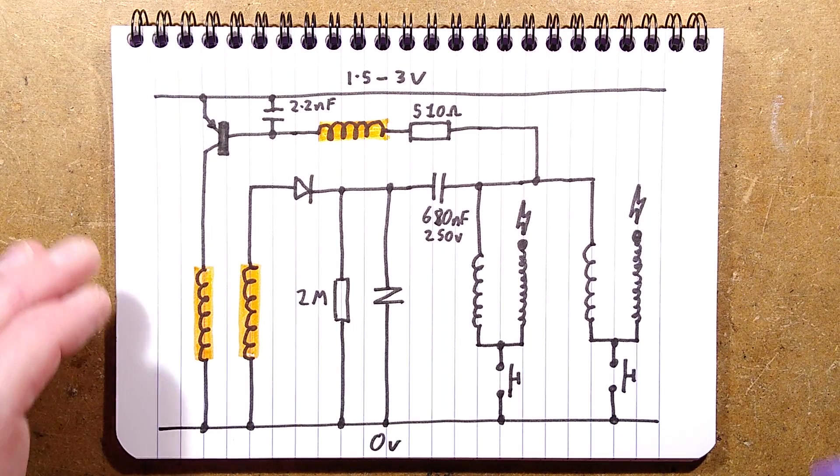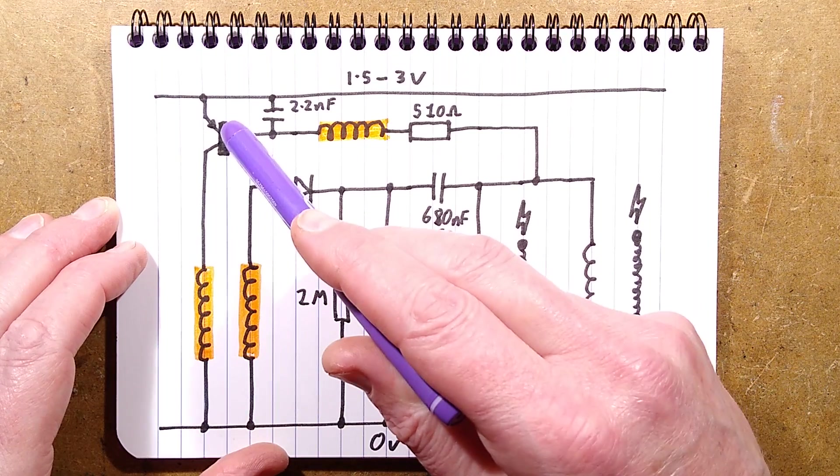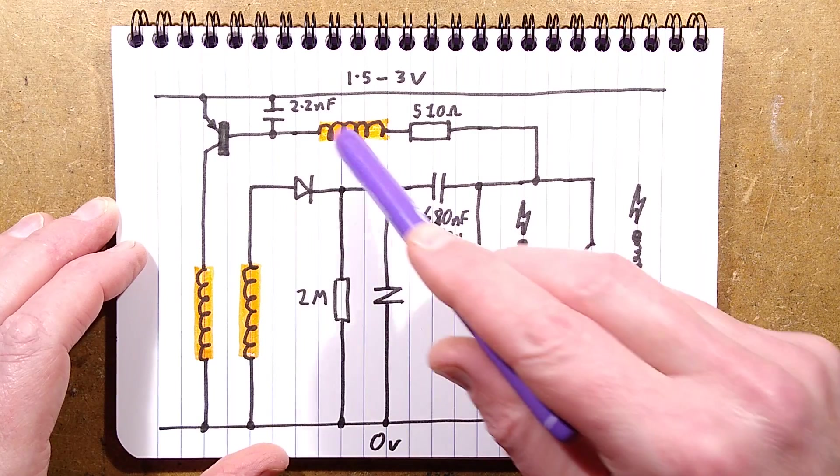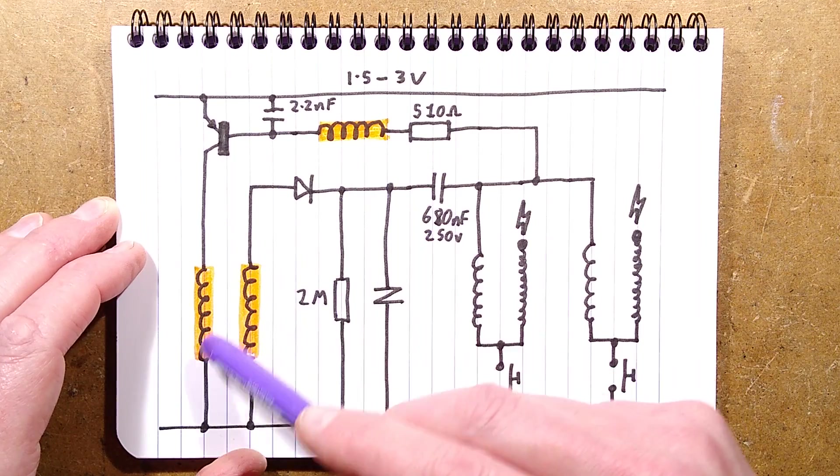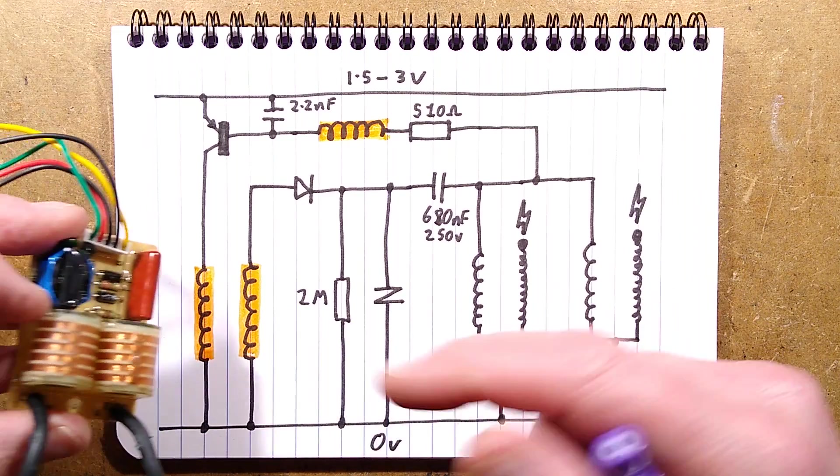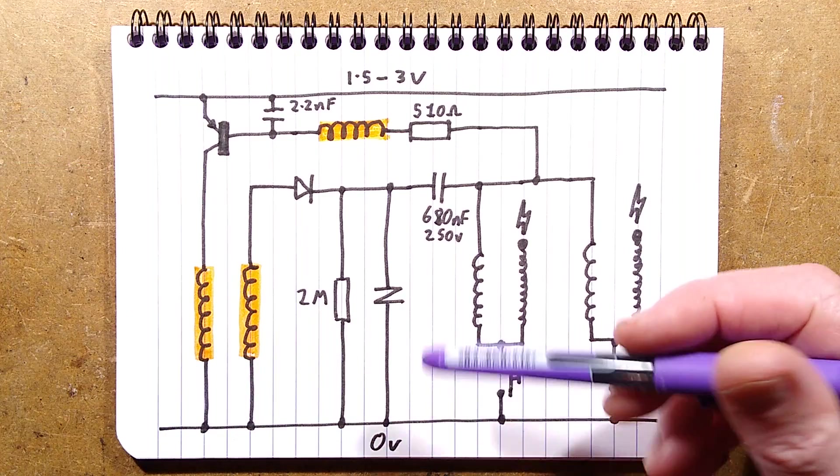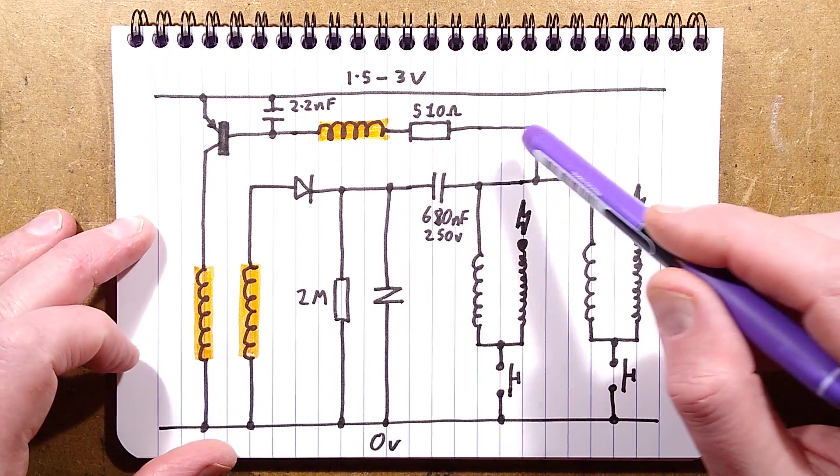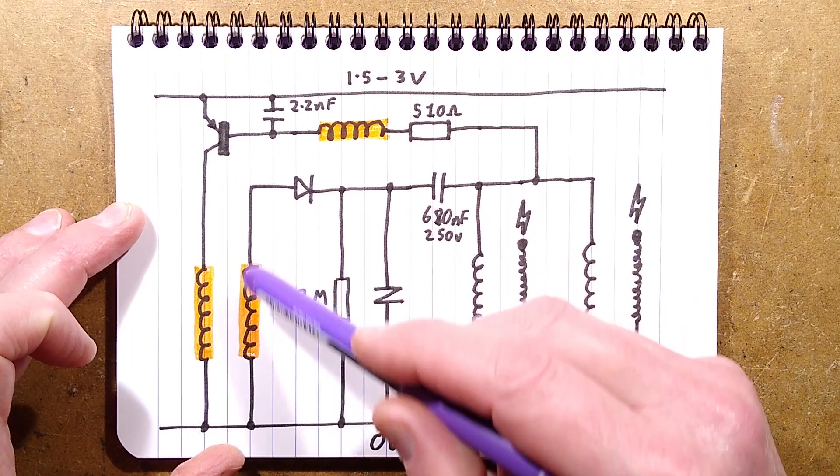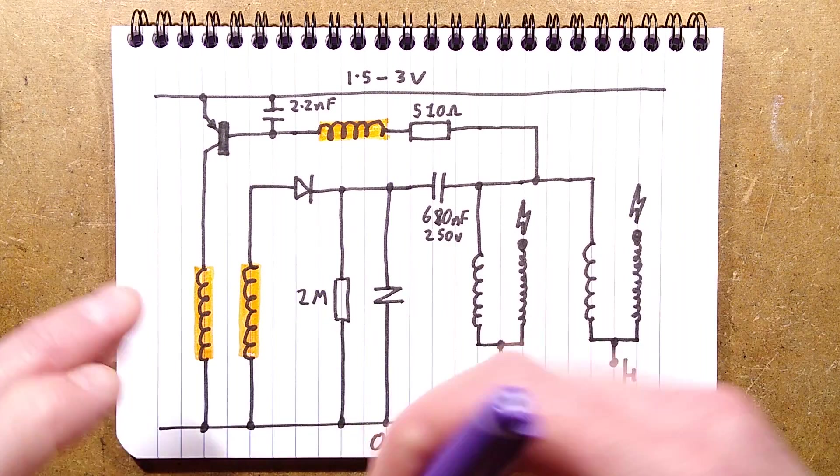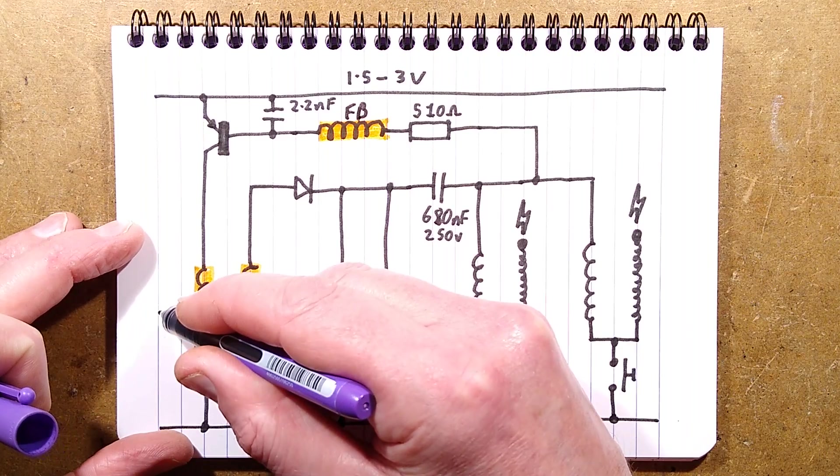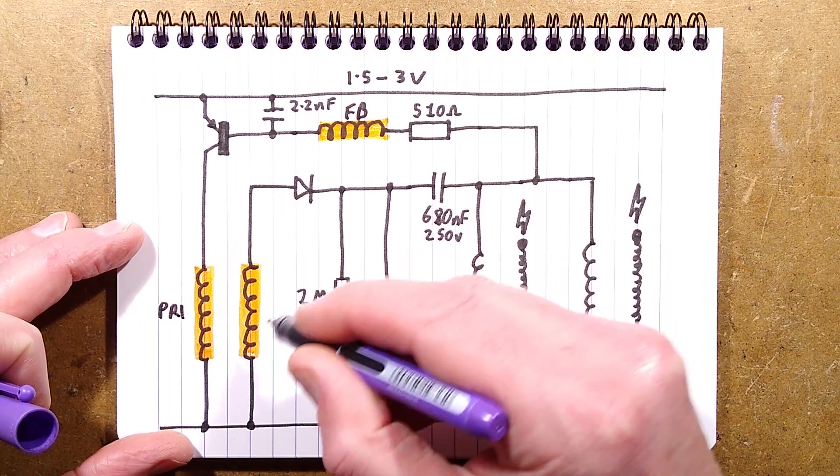The schematic. Right, so looking at this, we have a PNP transistor and we've basically got a standard feedback. The orange indicates one transformer, that's the little transformer there. And if you just took this connection directly to the zero volt rail, that would form a sort of feedback oscillator where this is the feedback winding, this is the primary, and this is the secondary.